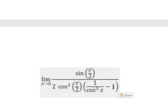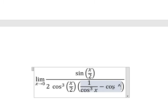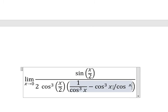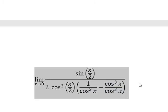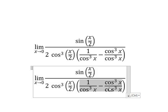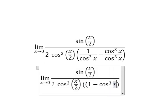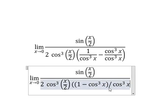Next, number 1, we can put into cosine of x to the power of 3 over cosine of x to the power of 3. So this one we can rewrite as 1 minus cosine of x to the power of 3 over cosine of x to the power of 3.